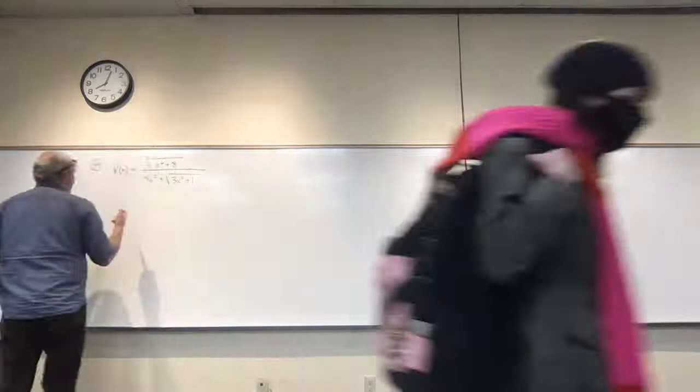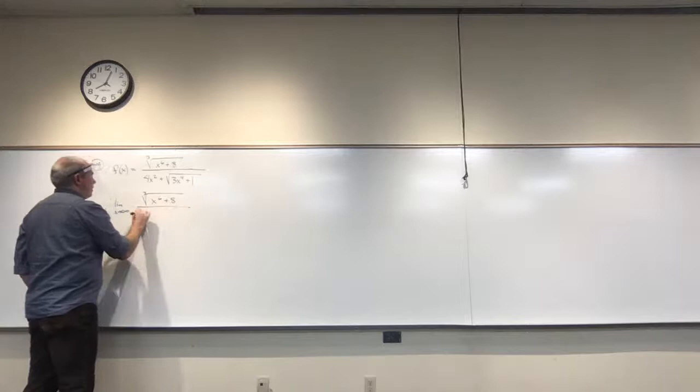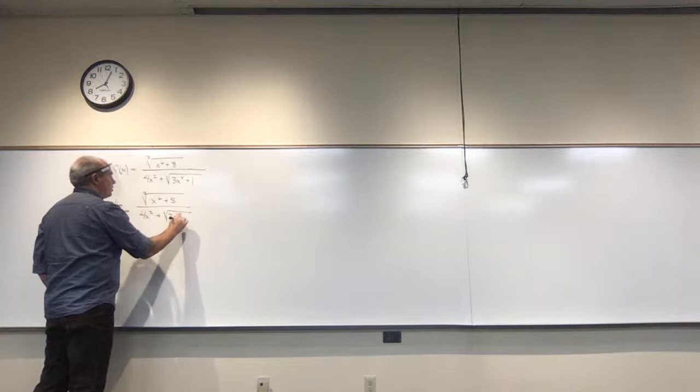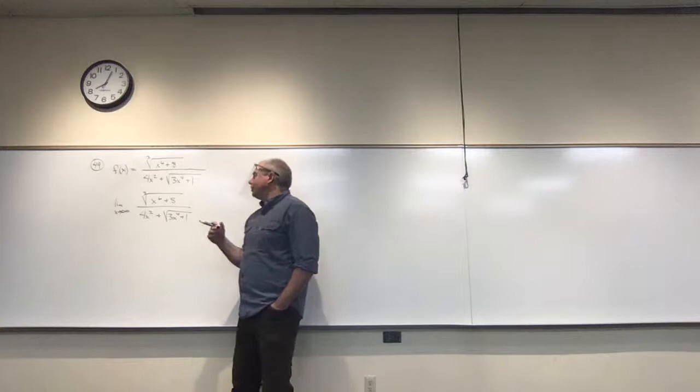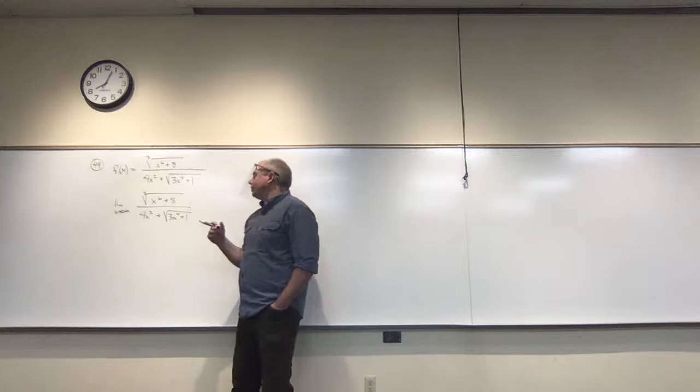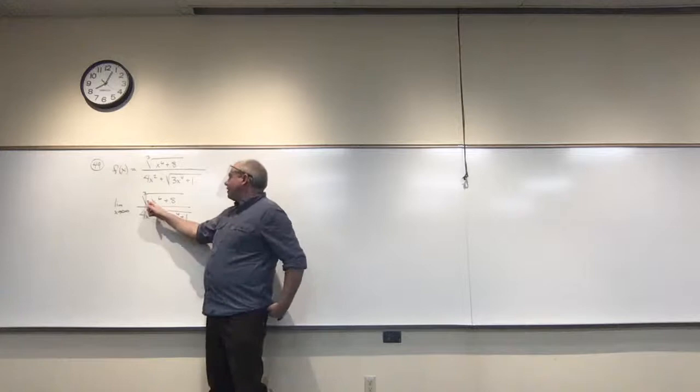Let's take a look at the limit as x goes to infinity. On top we get the cube root of x to the sixth plus 8; on the bottom I have 4x squared plus the square root of 3x to the fourth plus 1. Typically for a rational function — a polynomial divided by a polynomial — I'd ask what the highest power of x is on top and bottom.